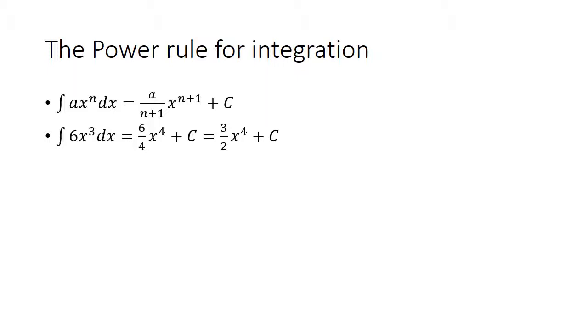Here's an example. 6x cubed. Add one to three, you get four, and then divide by it. You get this term plus your constant of integration. This simplifies to that, and you're done.